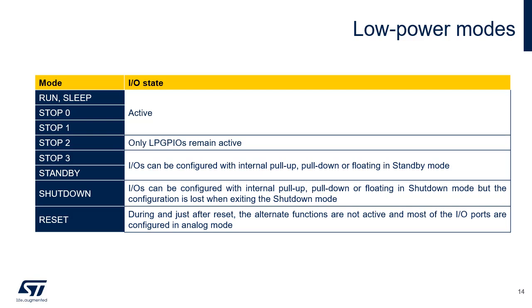GPIOs are active in run, sleep, stop-0, and stop-1 modes. Low-power GPIOs are active in run, sleep, stop-0, stop-1, and stop-2 modes. In stop-3, standby, and shutdown, the only available configuration is input with internal pull-up, pull-down resistor, or floating input. When exiting shutdown mode, the input/output configuration is lost. When the microcontroller is under reset, most input/output pins are forced into analog input mode.